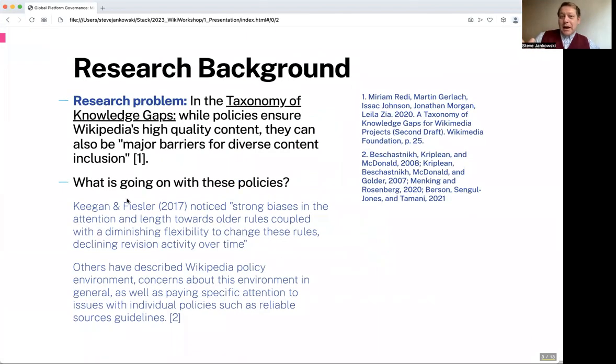The research background and research problem is kind of obvious. In 2020, the taxonomy of knowledge gaps identified numerous issues that could be improved in order to allow Wikipedia to reach its goal of giving access to humanity's knowledge to everyone.